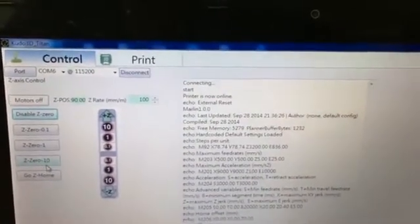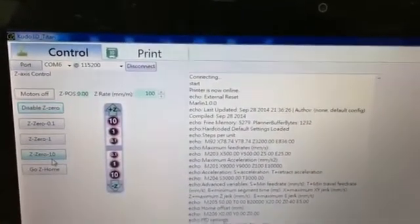For example, selecting the Z0-10 button lowers the platform from a greater height.